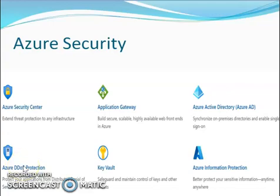Our next slide shows what Azure security is. Azure security provides various features which protect our data, and this data is taken care of by Microsoft. Some of the features are: Azure Security Center, where you can directly check what the issue is if you face any problems. Then we have Application Gateway to build secure, scalable, high-available web frontends in Azure. Then Azure Active Directory, used to synchronize all your data, securities, and passwords. Then Azure DDoS Protection, which protects us from denial of service attacks. And we also have Key Vault and Azure Information Protection.